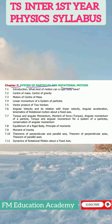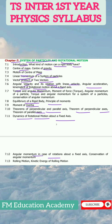Chapter 7, System of Particles and Rotational Motion: Introduction, what kind of motion can a rigid body have, centre of mass, centre of gravity, motion of centre of mass, linear momentum of a system of particles, vector product of two vectors, angular velocity and its relation with linear velocity, angular acceleration, kinematics of rotational motion about a fixed axis, torque and angular momentum, equilibrium of a rigid body, principle of moments, moment of inertia, theorems of perpendicular and parallel axis, dynamics of rotational motion about a fixed axis, angular momentum in case of rotations about a fixed axis, conservation of angular momentum, rolling motion, and kinetic energy of rolling motion.